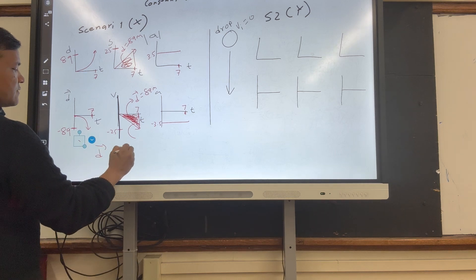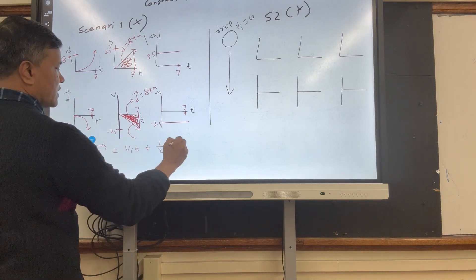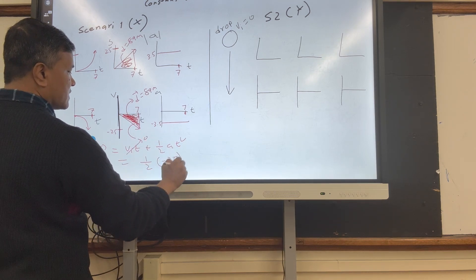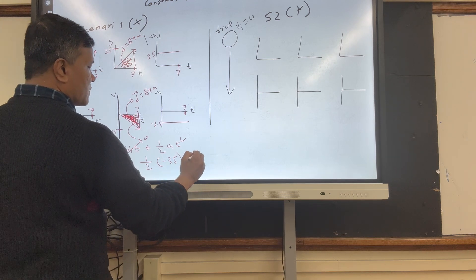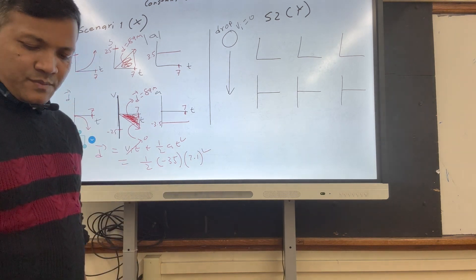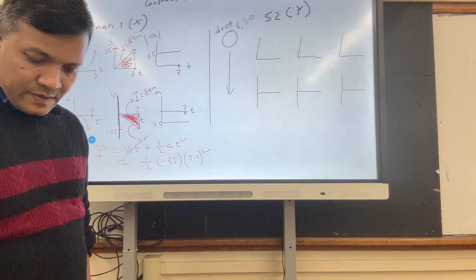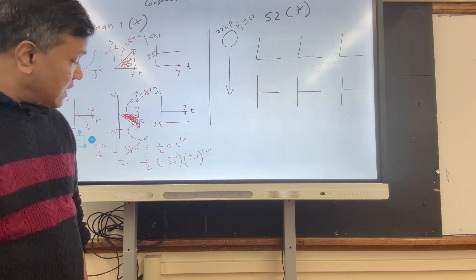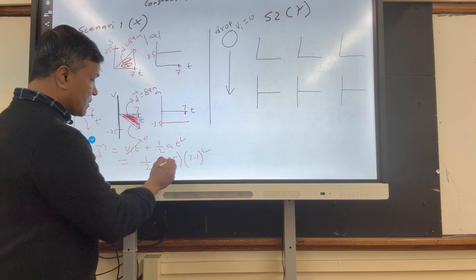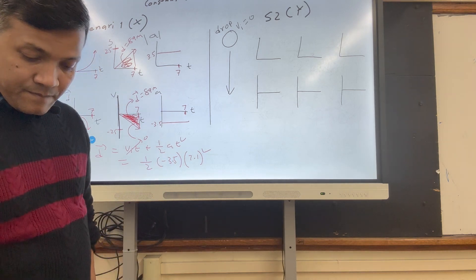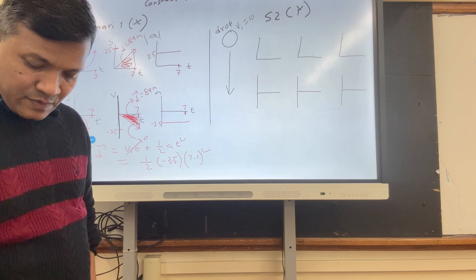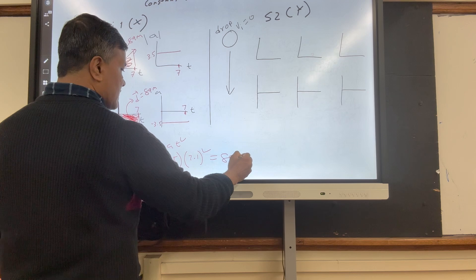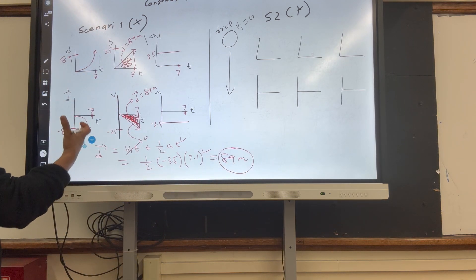You can also use d = vi·t + ½at². Since vi = 0, d = ½ × 3.5 × (7.1)². That's 3.5 × 0.5 × 7.1² = 89 meters. So no matter how you do it, you end up getting the same answer: 89 meters.